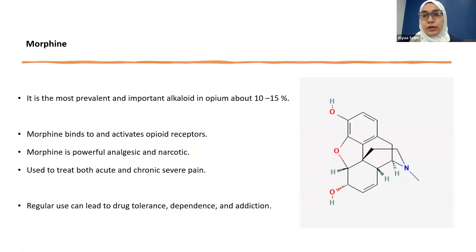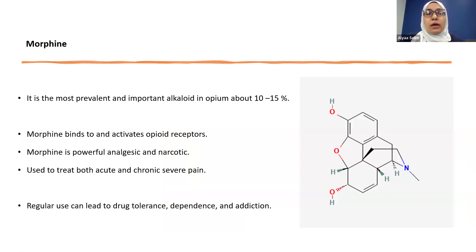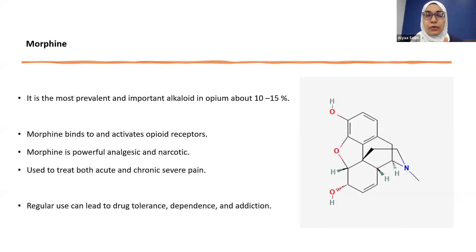First is morphine — it's the most prevalent and important alkaloid in opium, representing about 10 to 15 percent. Morphine binds to and activates opioid receptors and is considered one of the most powerful analgesics, belonging to a group called narcotic analgesics. It's used to treat both acute and chronic severe pain. Regular use of morphine can lead to tolerance, dependence, and addiction.